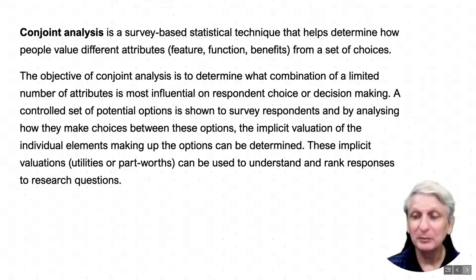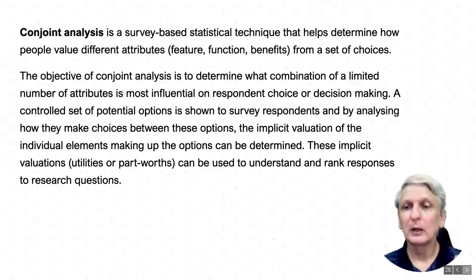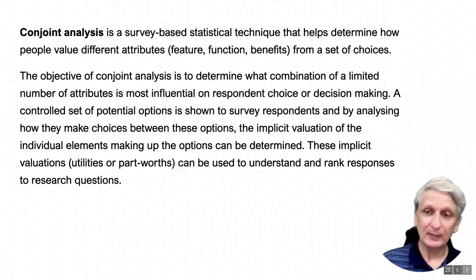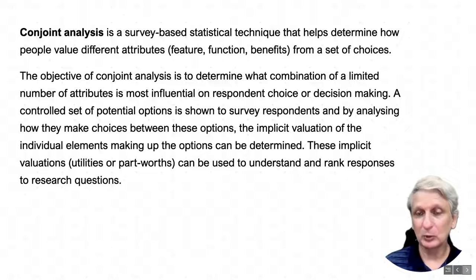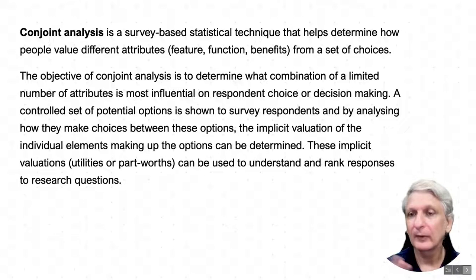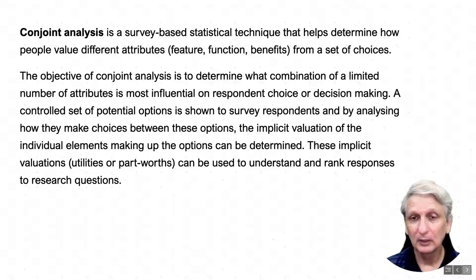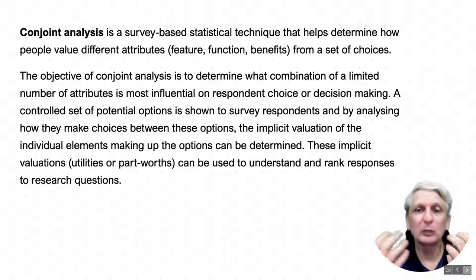The mathematics behind co-joint analysis can get involved, but you don't need to worry about that. It's simply a nice, easy way of achieving a ranked order of options. Participants find it quite engaging because it's simply a matter of choosing between two options, rather than being given a list of ten to rank in order, which can be more confronting. They might go through 30 choices very quickly, making that initial gut-feeling decision as to which they prefer.